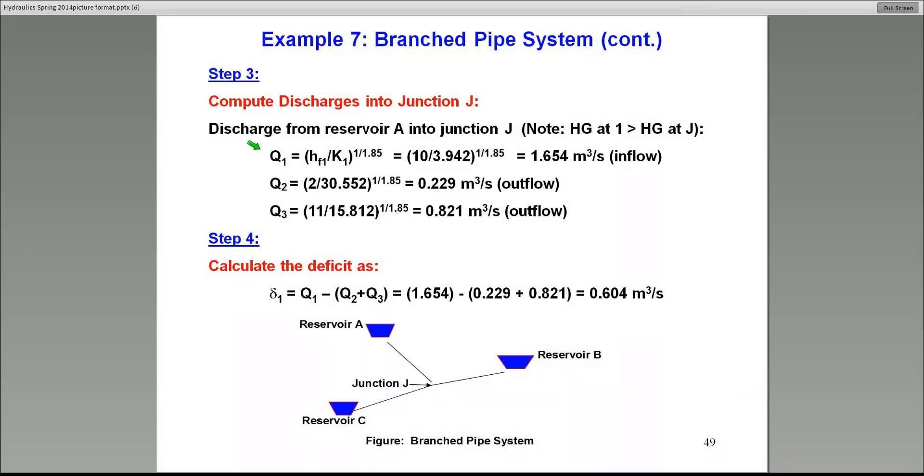For example, the flow in pipe 1 is the head loss of 10 meters divided by the K value for that pipe, and then invert it. This is using the K Q to the power of 1.85 equation. I solve for Q. In this case, it is 1.654 cubic meters per second. Do the same thing for pipe number 2 and 3. Now keep in mind, as I go along, I label them.